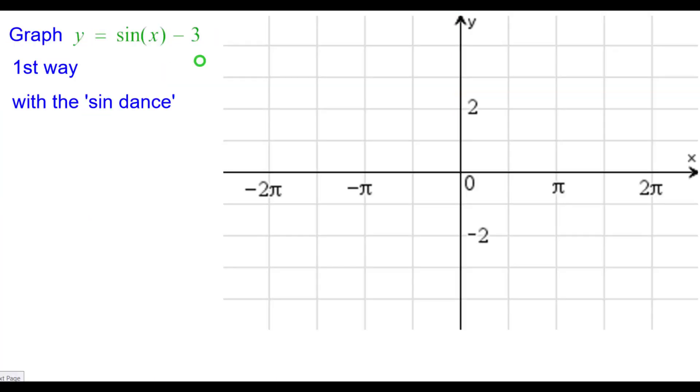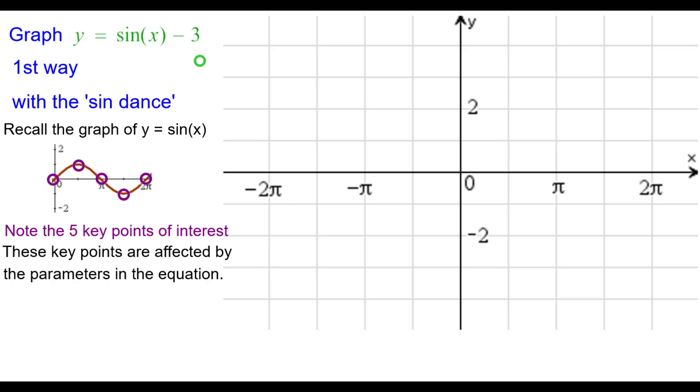Graph y equals the sine of x minus 3. The first way is with what we call the sine dance. Please recall what the graph of the sine looks like and there are five key points of interest that I'll put circles on them.